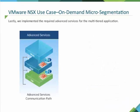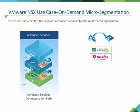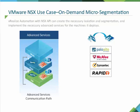Advanced services such as McAfee, Symantec, and Rapid7 were implemented for the multi-tiered application. So vRealize Automation with NSX API can create the necessary isolation and segmentation, and implement the necessary advanced services for the machines it deploys.